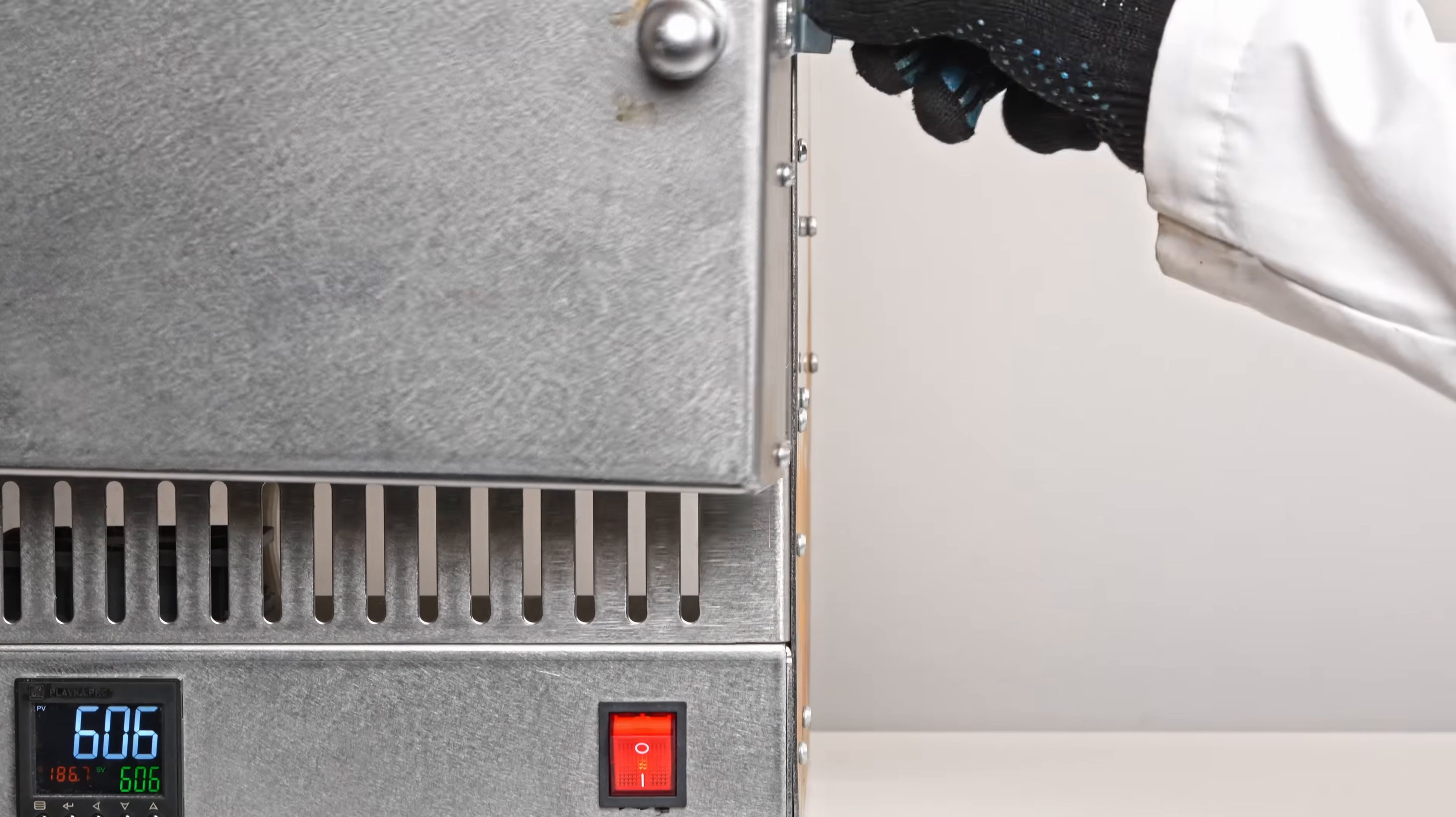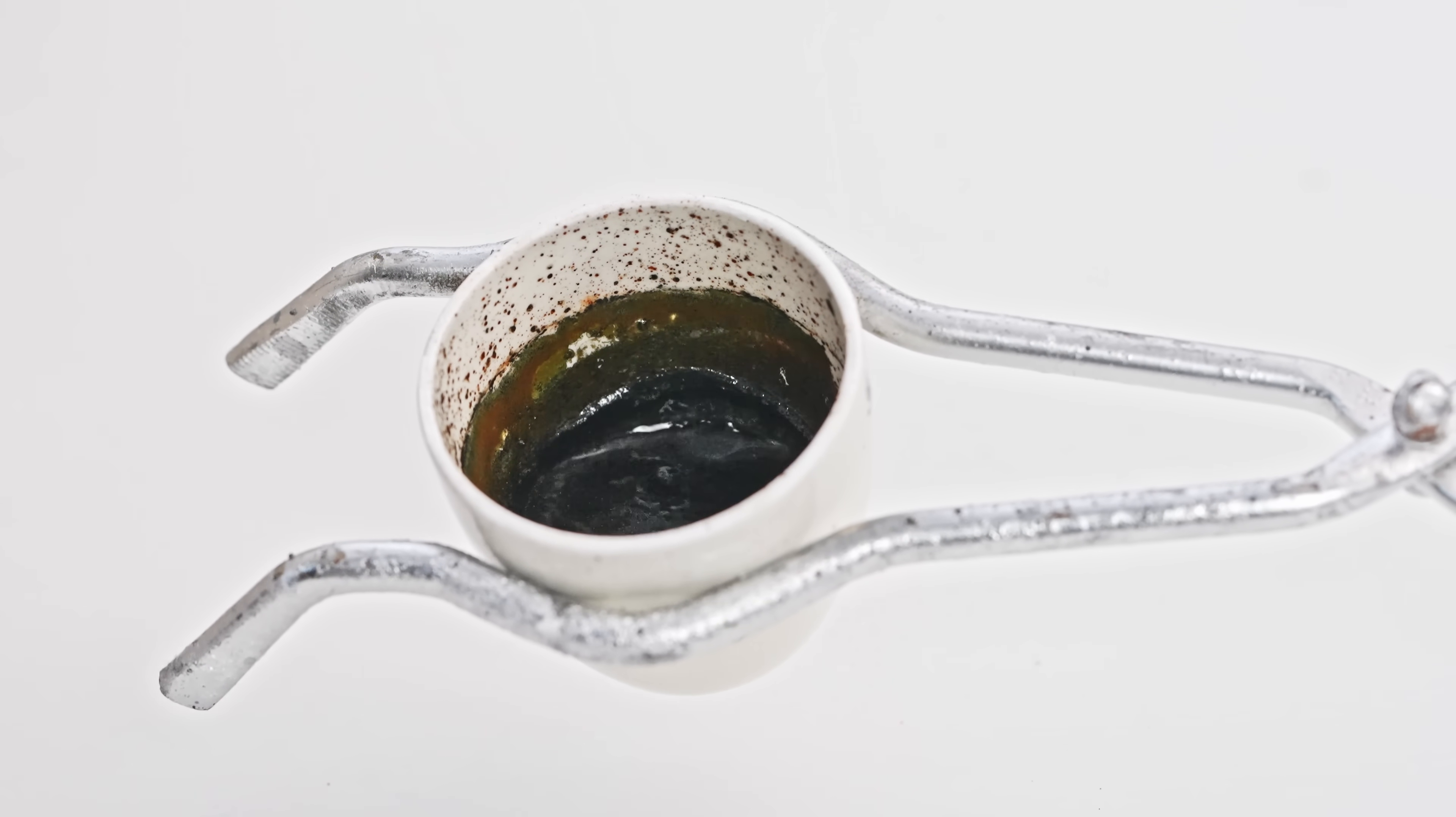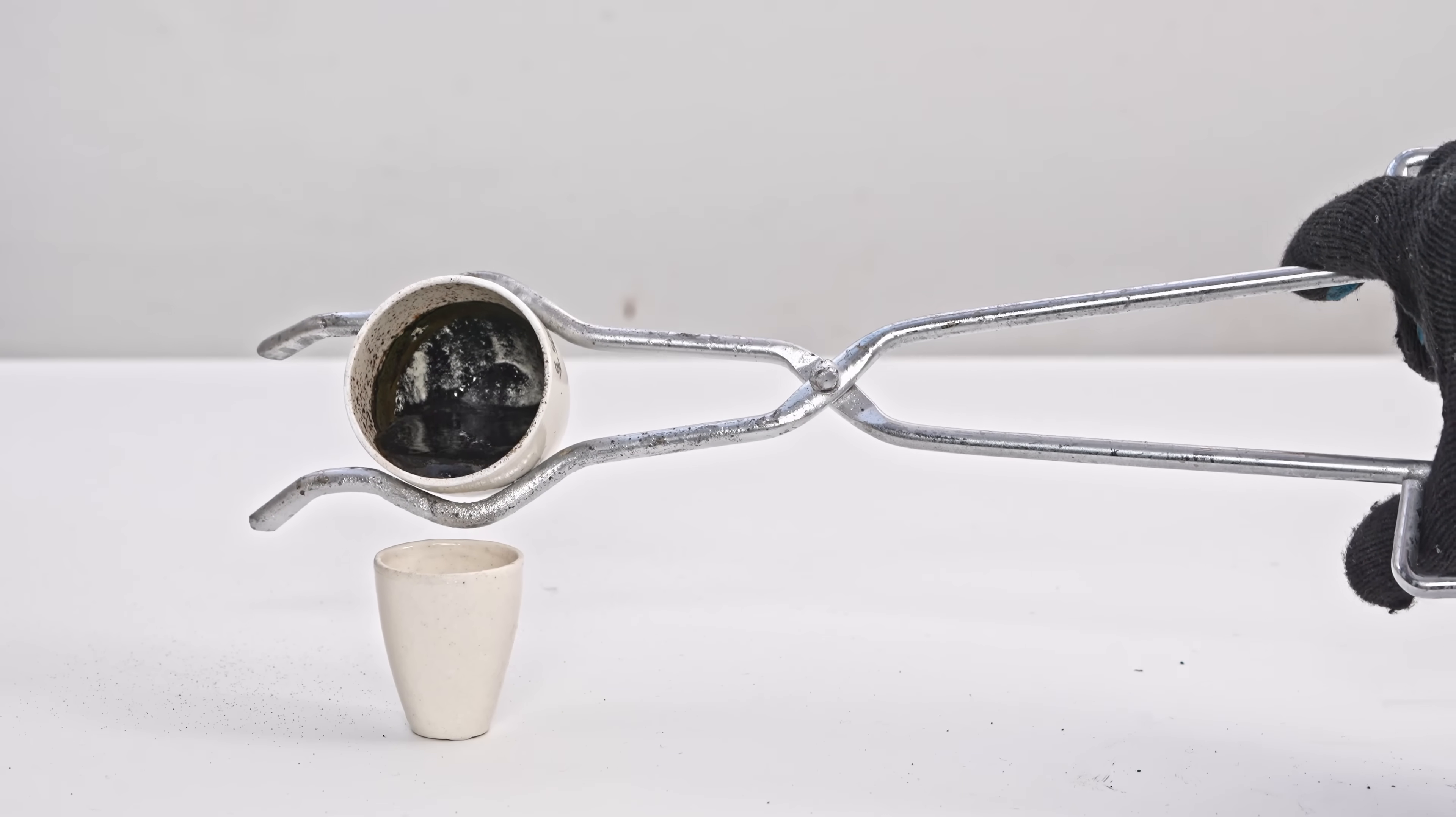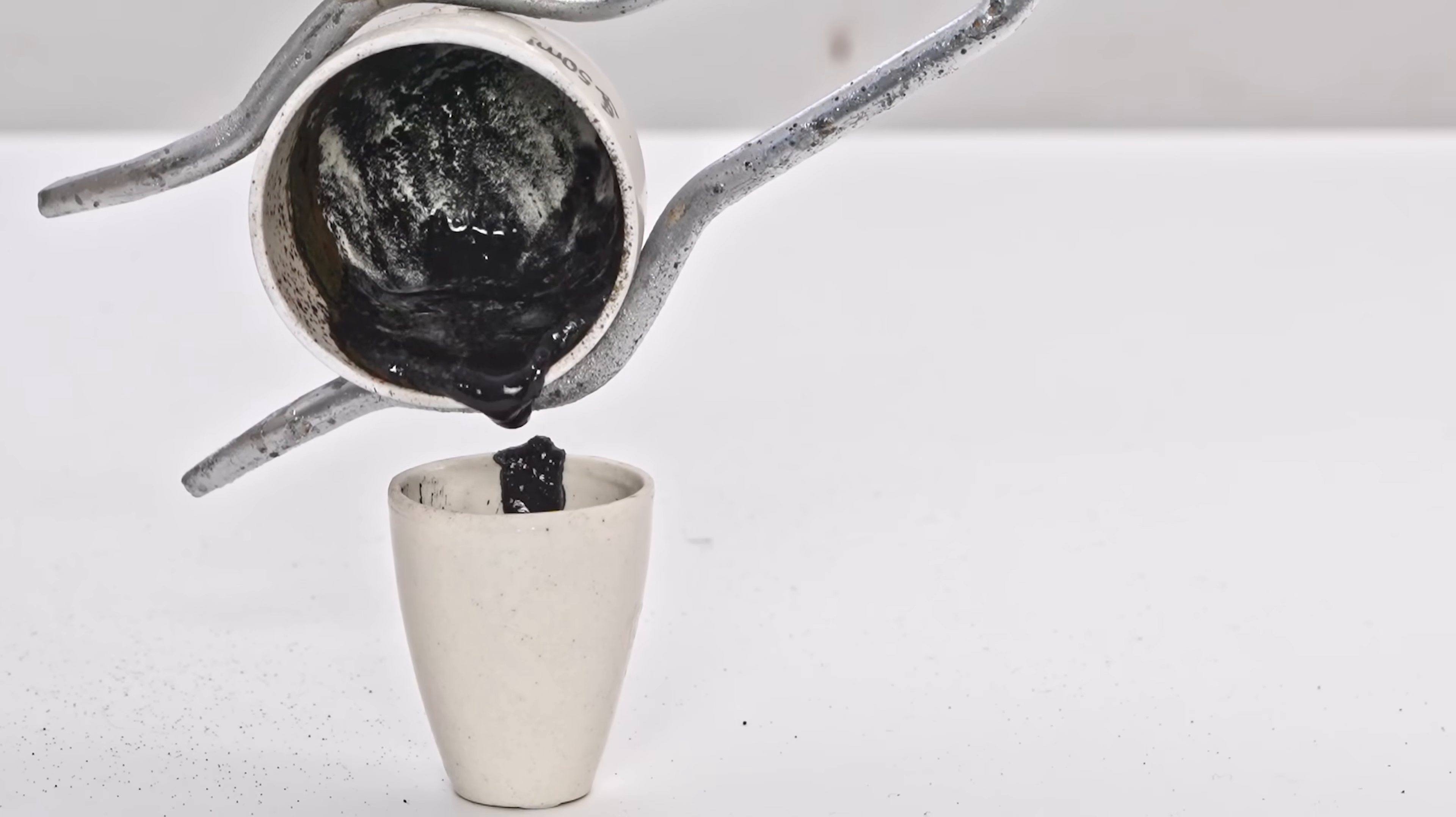After the reaction was complete, which can be determined by the absence of gas bubbles from the melt, I took the melt out of the muffle furnace and poured it into another crucible. The black color in the melt comes from elemental iron, a by-product from the reaction.